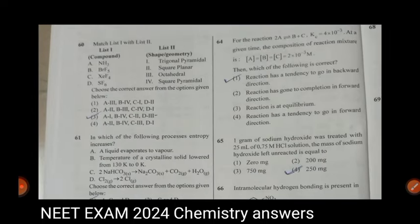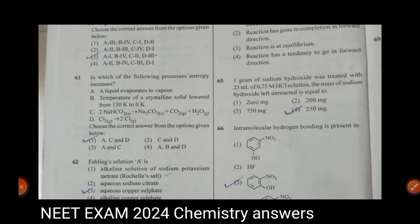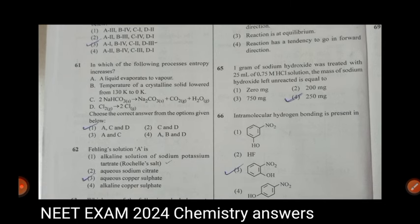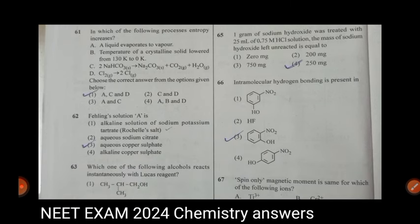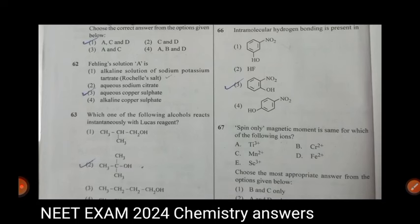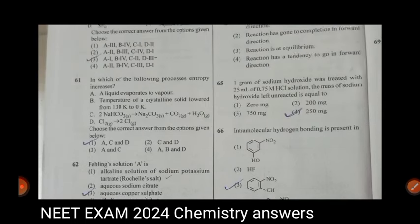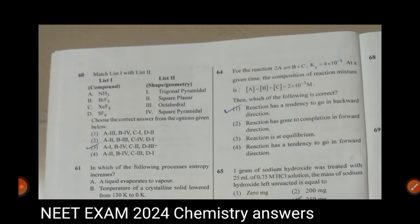Question 60, match list 1 with list 2. Question 62, failing solution A is aqueous copper sulphate. Question 63, which one of the following alcohols reacts instantaneously with Leucasse reagent? Answer is second one. Question 64, first one, reaction has a tendency to go in backward direction.